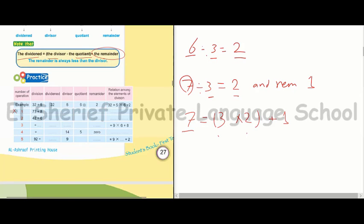Example number 1: 73 divided by 8. The dividend is 73 and the divisor is 8. We decrease 73 by 1 to get 72. 72 divided by 8 equals 9. But 9 times 8 equals 72, and we need 73, so the remainder is 1. The relation: dividend 73 equals divisor 8 times quotient 9, plus remainder 1.